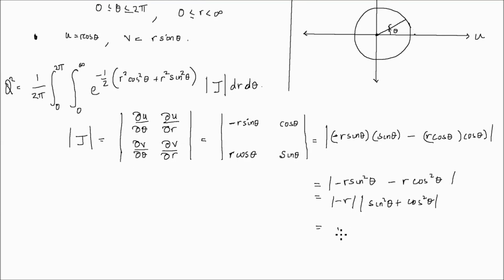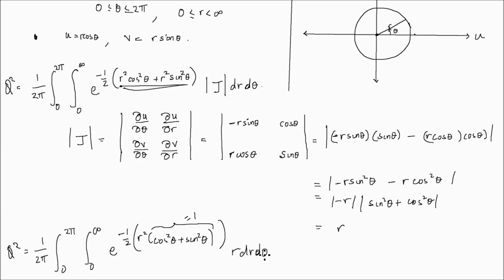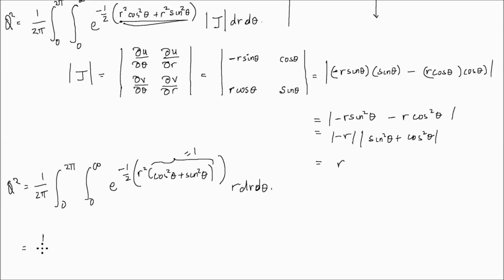So Q squared becomes 1 over 2 pi times the double integral from 0 to 2 pi and 0 to infinity of e to the negative one-half times r squared cosine squared theta plus r squared sine squared theta. Taking r squared as common leaves cosine squared theta plus sine squared theta, which equals 1, times the Jacobian r, giving e to the negative one-half r squared times r dr d theta.